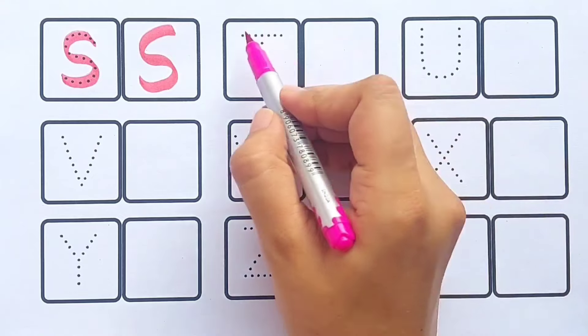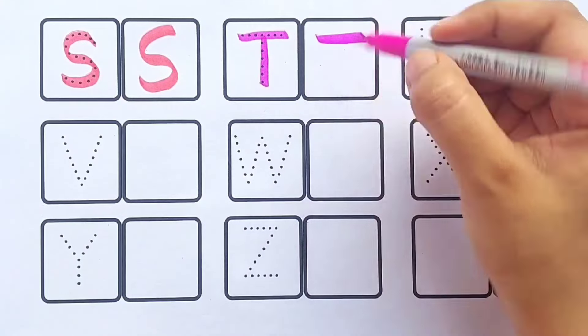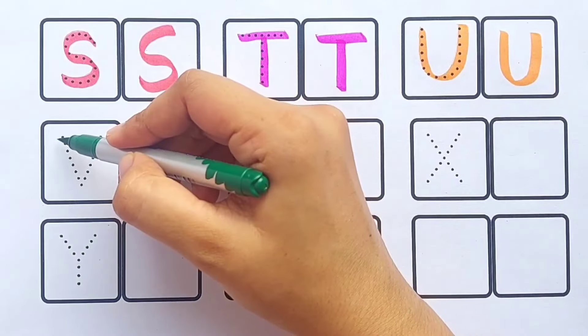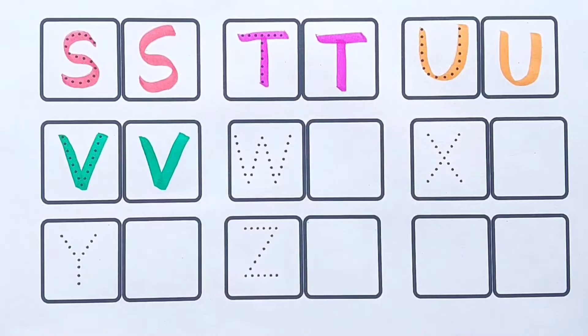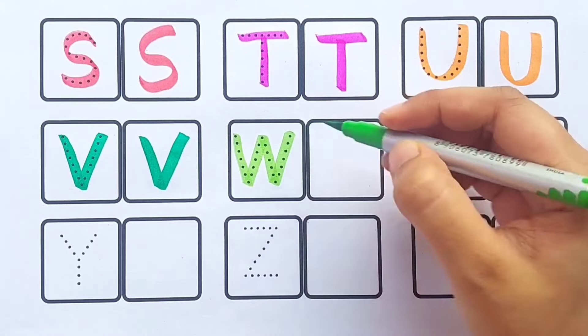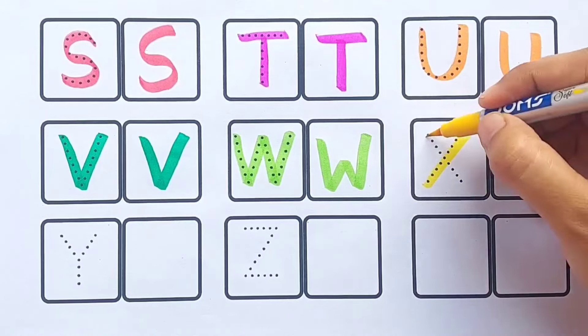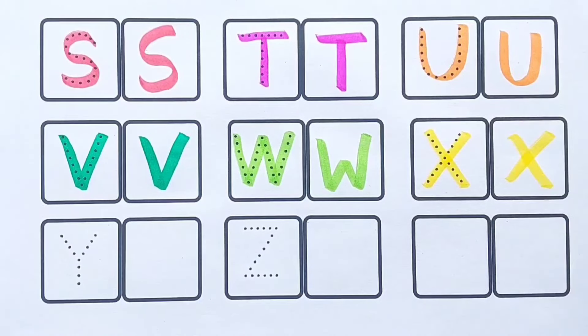T T for tiger, orange color. U U for unicorn, green color. V V for van, light green color. W W for watch, yellow color. X X for x-ray, blue color.